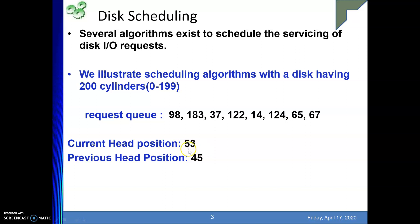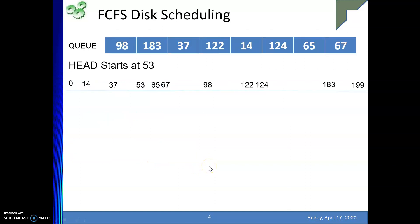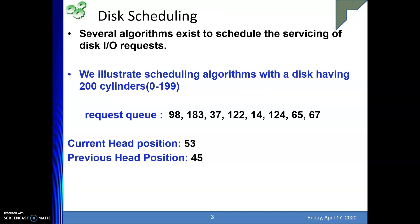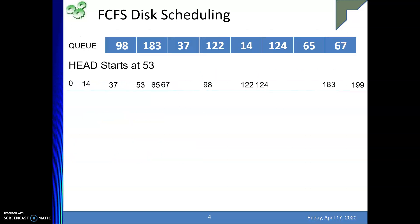Before coming to position 53, the head was at 45. This data is not required for FCFS scheduling, but for other algorithms the previous position may be meaningful. Now, the first scheduling algorithm we look at is FCFS — First Come First Serve. The name is sufficient to tell its meaning: in whichever order the requests arrive, in that order they will be serviced.